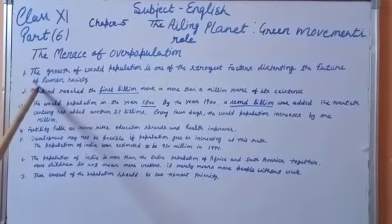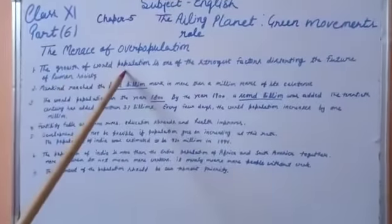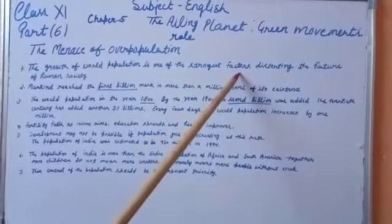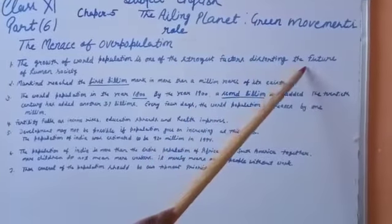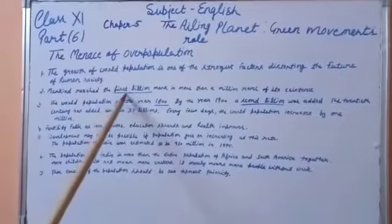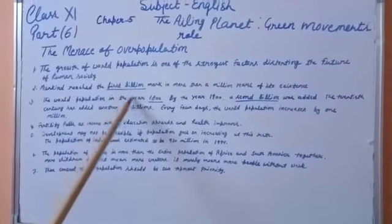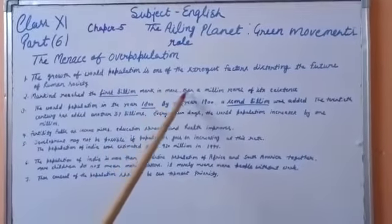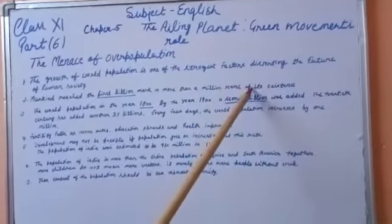Children, as you know, the growth of world population is one of the strongest factors distorting the future of human society. Mankind reached the first billion in the year 1800, marking more than a million years of its existence.